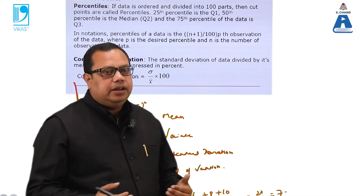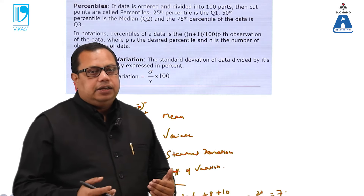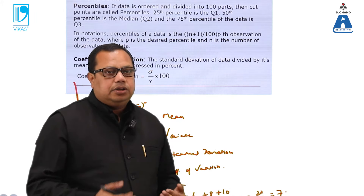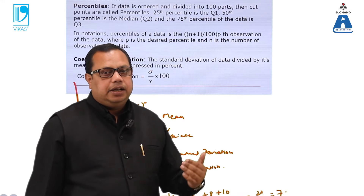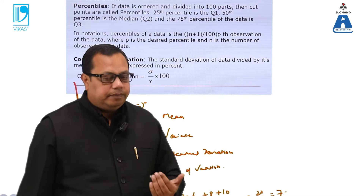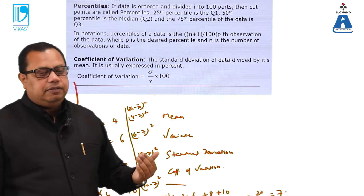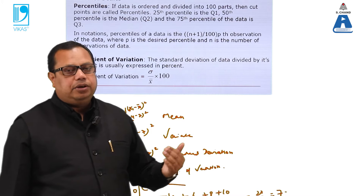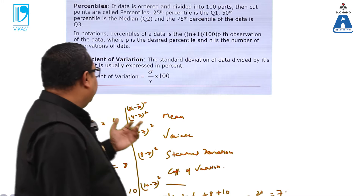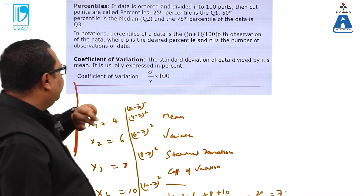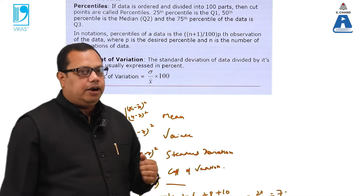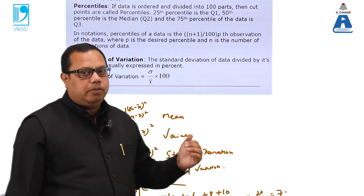The connectivity is: standard deviation depends on variation, variation depends on the mean. Every formula is interconnected. First calculate the mean, then variation, then standard deviation, then the coefficient of variation — the same chain applies throughout. We will take a short break and then study more formulas.